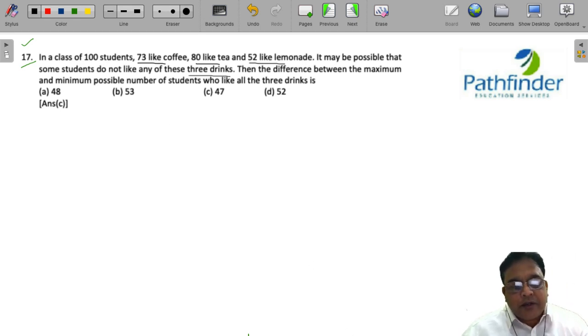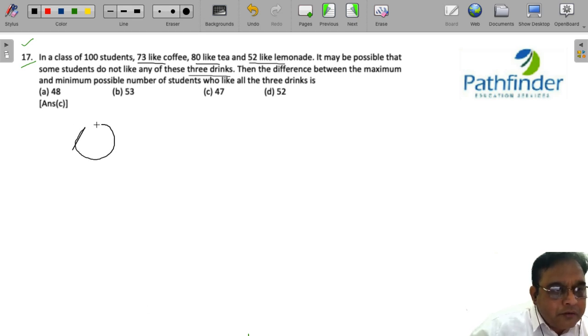Now, this is a question based on inclusion and exclusion. Let us draw a Venn diagram first. We have three circles representing people or students who drink coffee, tea, and lemonade respectively.